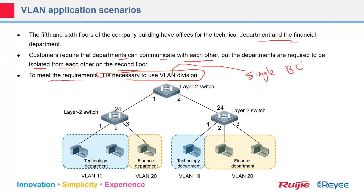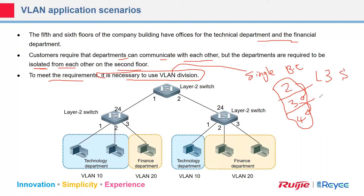A single broadcast domain means VLAN 2 cannot talk to VLAN 3, and VLAN 3 cannot talk to VLAN 4 — it's a completely isolated network. For those VLANs to communicate with each other there are two ways: implementing Layer 3 switches, or router-on-a-stick. Here we have three Layer 2 switches. The technology department is in VLAN 10 and the finance department is in VLAN 20. The technology department on one switch can talk to the technology department on another switch via access ports.